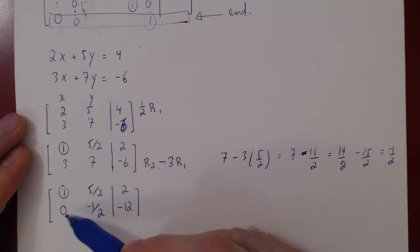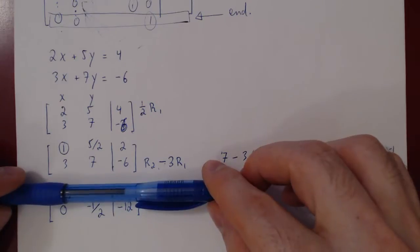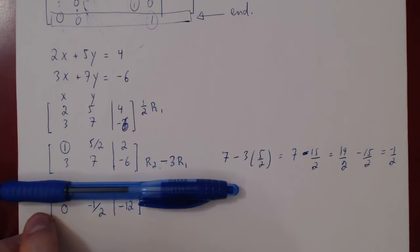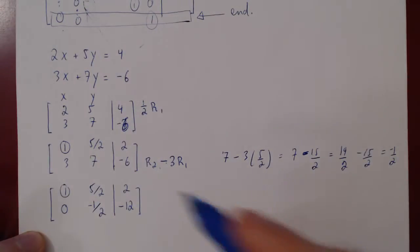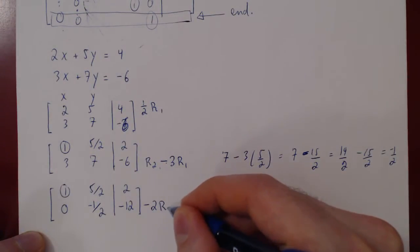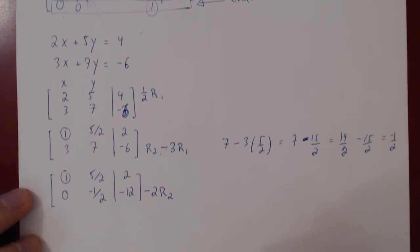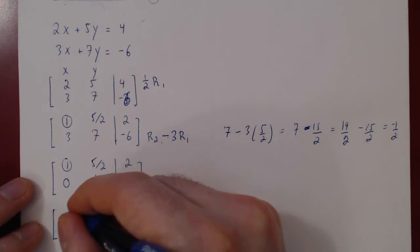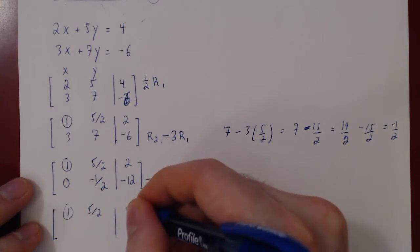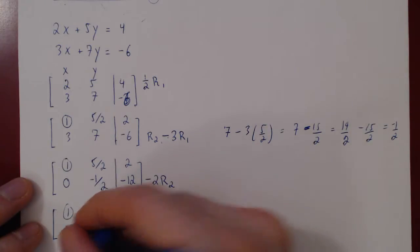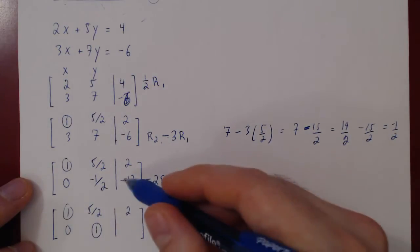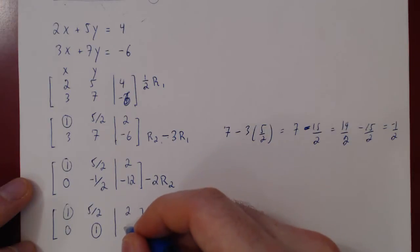Now that every entry below our leading 1 is 0, we ignore the top row and try to construct our second leading 1. The entry in the first column is 0, so the leading 1 will come from the -1/2 entry. We multiply row 2 by -2 to obtain our second leading 1. Recopying row 1: 1, 5/2, 2. Performing the operation: -2×0 = 0; -2×(-1/2) = +1 — our second leading 1; -2×(-12) = +24.